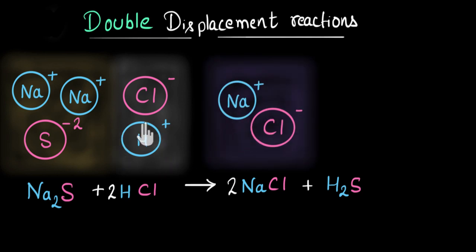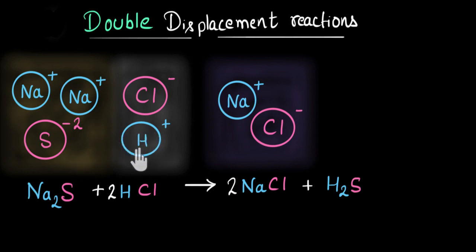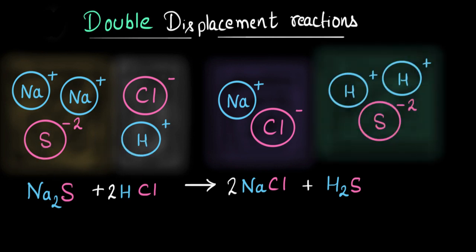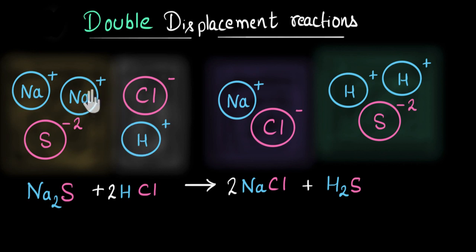And similarly, hydrogen that was earlier only attracted to chlorine now sees that there are sulfur minus 2 ions also present in solution. So some of the hydrogen ions will get attracted to sulfur minus 2 ions and they will form hydrogen sulfide. This is something that is happening in every double displacement reaction. First of all, the reactants will break down into their ions, and then the ions will exchange position to form new products. Now this model can help us answer all our questions.